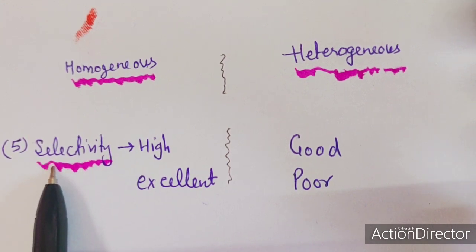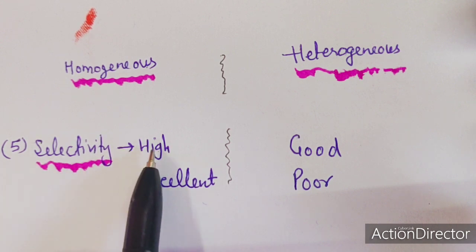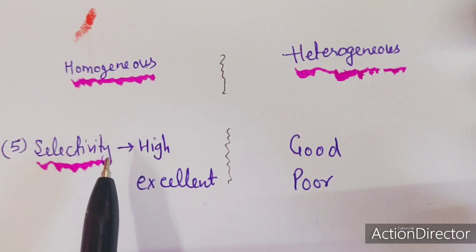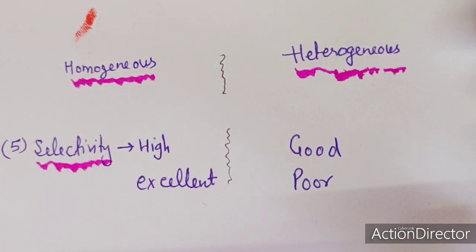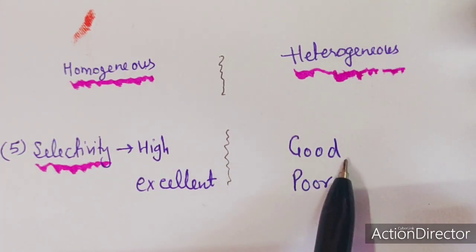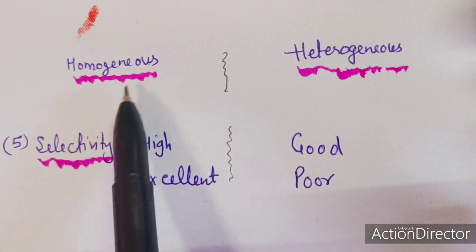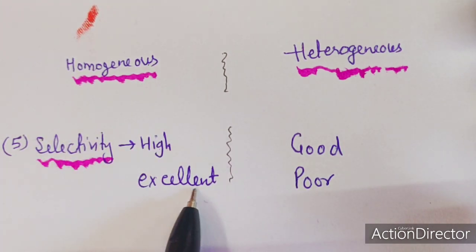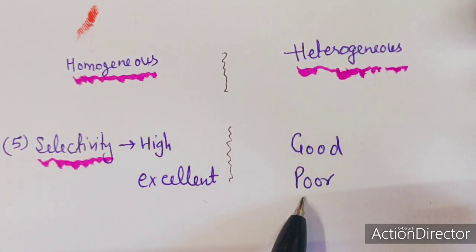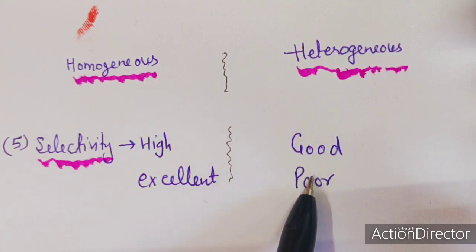Regarding selectivity, homogeneous catalysts are highly selective — they act at specific positions, and their selectivity is excellent. Heterogeneous catalysts have good or poor selectivity. So homogeneous catalysts have greater selectivity compared to heterogeneous catalysts.